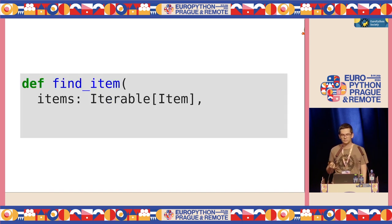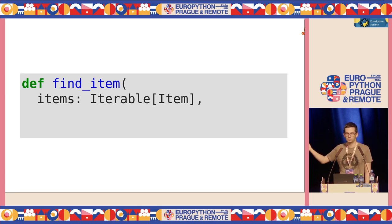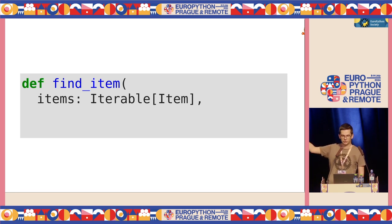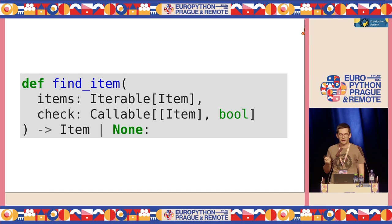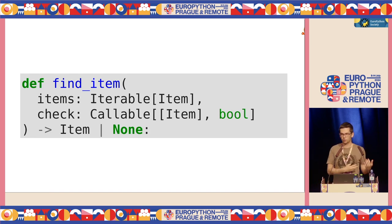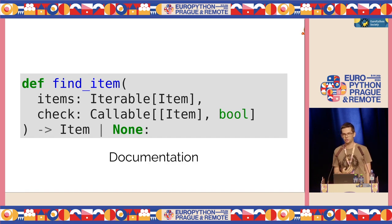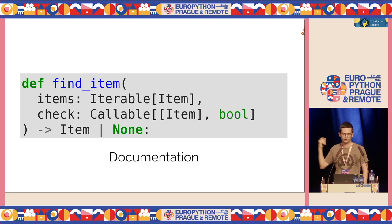But if we do add type hints, we can see that 'items' is something iterable containing items. I can click on it in my IDE and immediately see the definition of the type. 'Check' turns out to not be a boolean — it's a function that will probably be called for each item. And the function returns an optional item, so I need to handle the case where it is missing. Types provide documentation that never gets out of sync, because it is code after all.